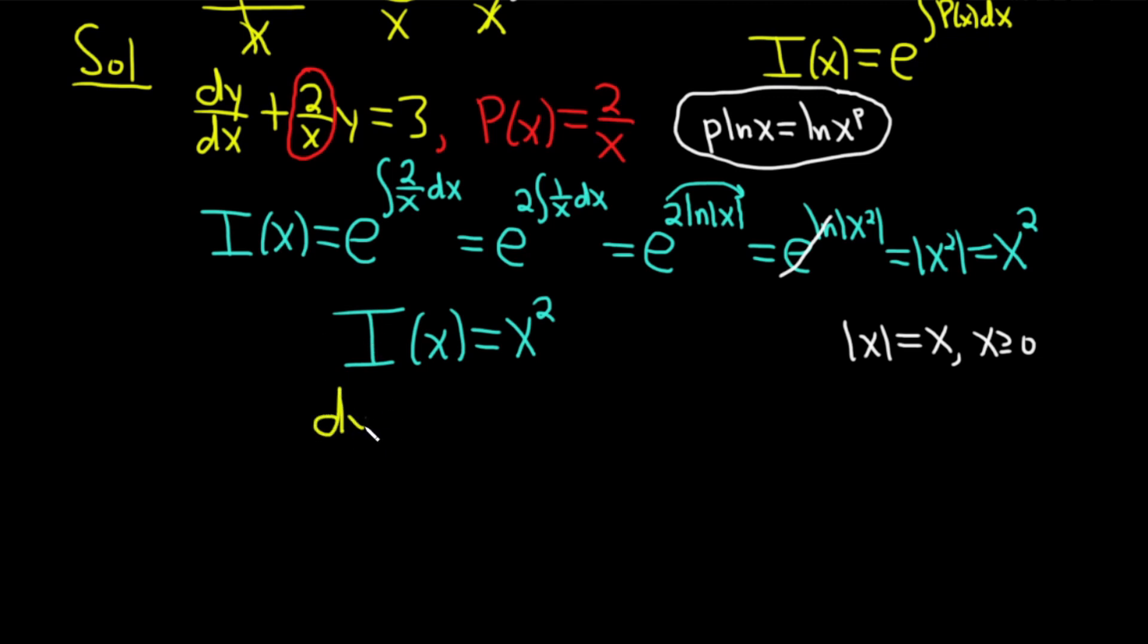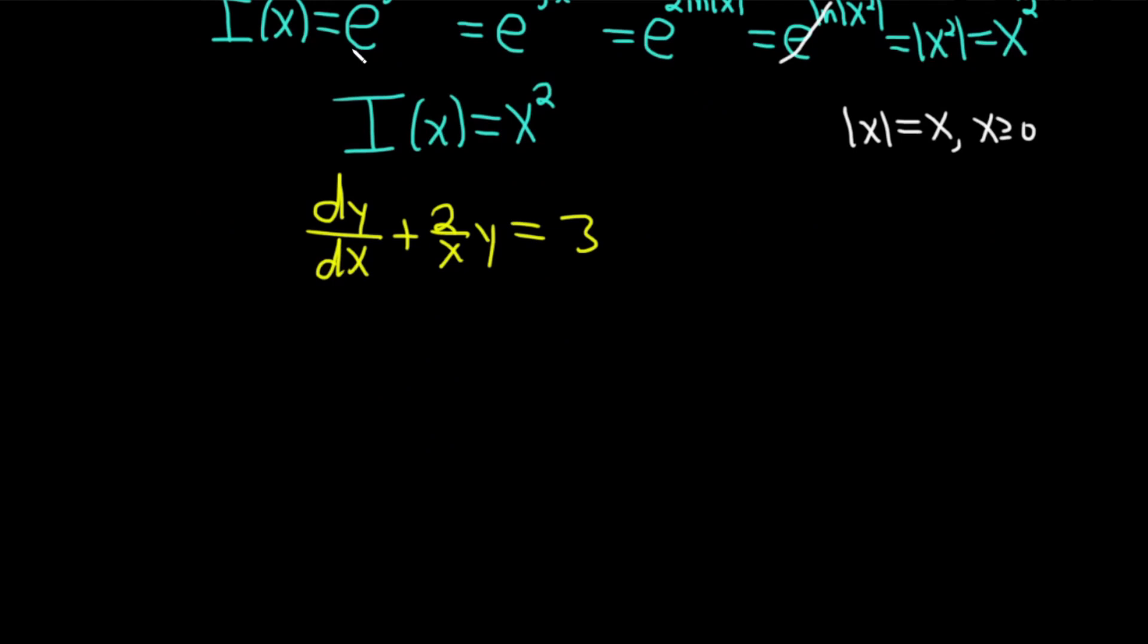I'm going to write it again: dy/dx + (2/x)y = 3. Now we're going to take this differential equation and multiply it by I(x). This is where it gets really interesting. So x²(dy/dx) + x²·(2/x)y = 3x².